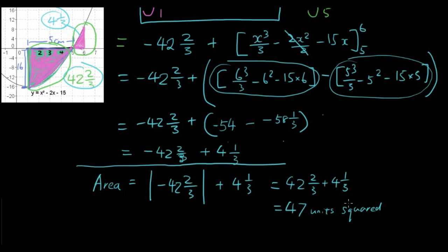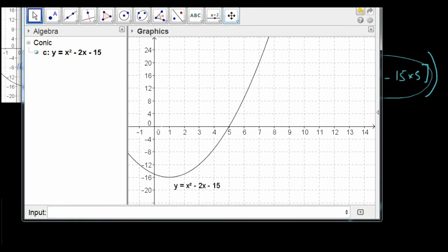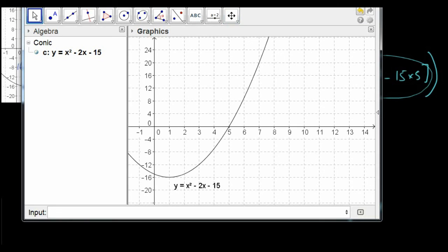Alright, so we are going to use GeoGebra to help us check that this area is correct. So if you have a look at GeoGebra, we have the same curve already drawn and we are going to use the integral function to tell us the area between x is 1 to x is 5.